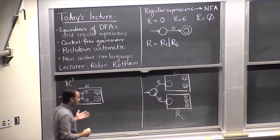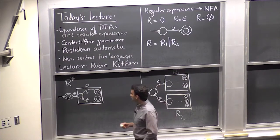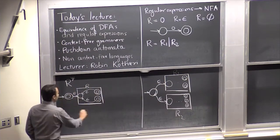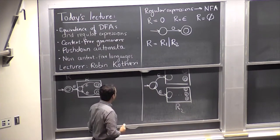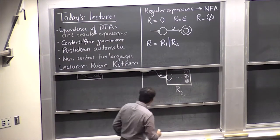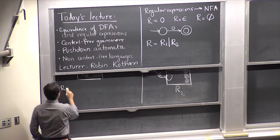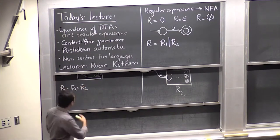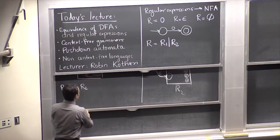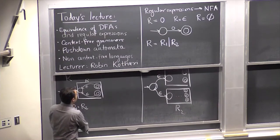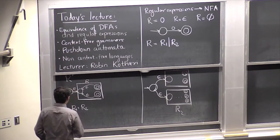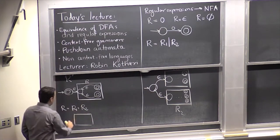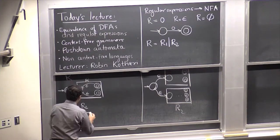This NFA really does accept R star. If this box accepts R, this whole NFA accepts R star. The only other thing you can do with regular expressions is concatenate them. You have a regular expression R1 and another R2, and you accept strings where the first part is in R1 and the second part is in R2.